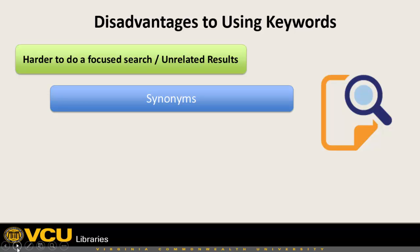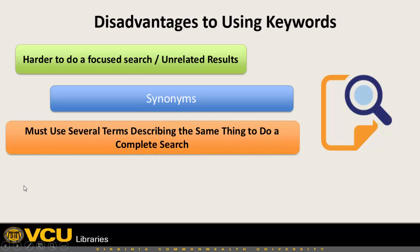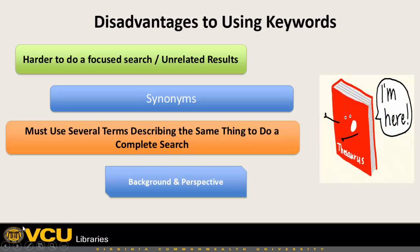Not only is it hard to do a focused search, but if you're ever doing a keyword search, you're also never going to be fully confident that you have a complete search. Many times you're going to have to use several different terms or concepts to describe the same thing in order to make sure you're gathering all of the articles on a particular topic, because you can never be sure how someone is describing something. This is especially true when you think about the various databases, and when your background or education may not allow you to be as familiar with the topic as needed to come up with multiple terms.